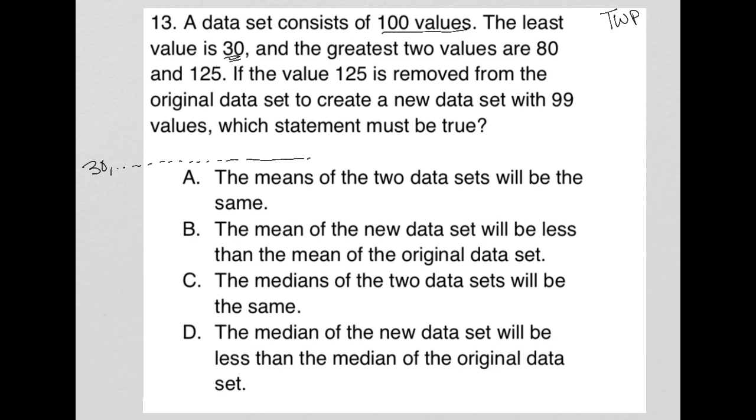And the greatest two values are 80 and 125. So here at the very end, I have 80 and 125. So I have like 97 more values in there between 30 and 80.